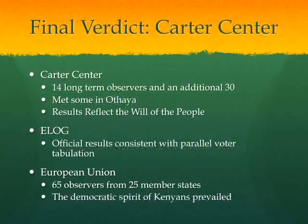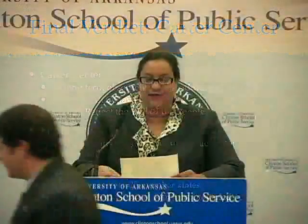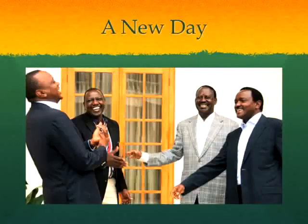The Carter Center's verdict was that the results reflect the will of the people. The Elections Logistics Group — the Kenyan electoral group — said the official results were consistent with their own independent parallel voter tabulation. And finally, the European Union, which had 65 observers from 25 member states, said that the democratic spirit of Kenyans prevailed.